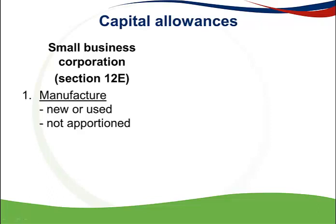The first allowance under Section 12E is for plant and machinery used directly in the process of manufacture. These assets can be new or used, and the allowance is not apportioned. This means that the taxpayer claims the full allowance even if the asset was used for only part of the year. The percentage applicable is 100%, claimed in the year that the asset is brought into use, so the full cost is claimed in the first year.